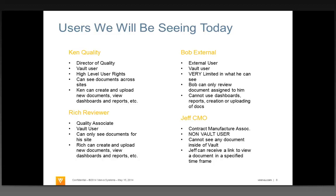Ken can perform a lot of functionality — like create and upload, look at dashboards, look at reports, and so forth. We'll contrast that with a guy in the lower left corner, Rich Reviewer. He's part of the same organization as Ken, but he's a quality associate — a bit lower level. He's still a Vault user with a username and password, but he can only see documents for his site. He can create and upload new documents and look at dashboards and reports too, but he would only be able to report on what he's allowed to see.